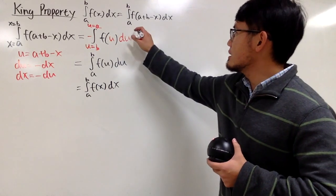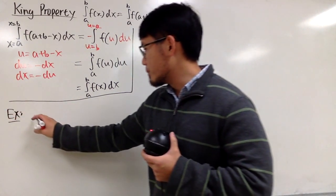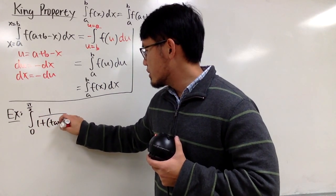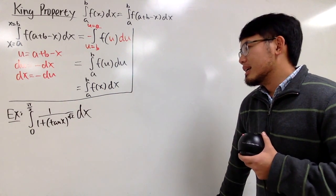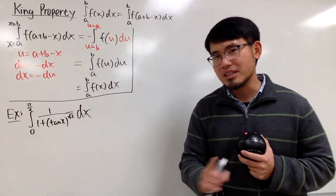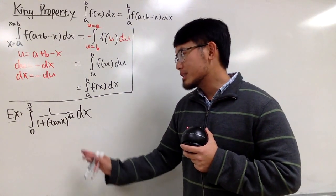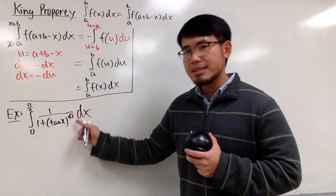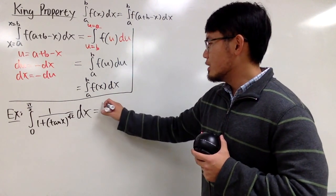Example time. Here is the classic one: the integral from 0 to π/2 of 1 over (1 plus tangent x to the square root of 2 power) dx. For those who know this, yes, it's a really classic one. The answer is π/4. Also notice that the square root of 2 power doesn't matter — you could put tangent x to the π power and it would still work out nicely.